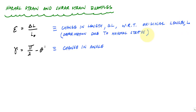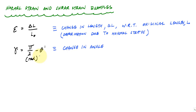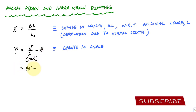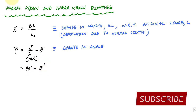We're also going to do some examples with the shear strain equation: pi over 2 minus theta prime. This equation is provided in radians, and it represents the change in angle relative to a right angle. You can also write this in degrees as 90 degrees minus theta prime. The shear strain is a deformation due to shear stress.